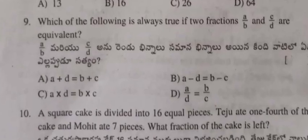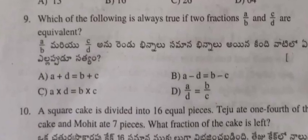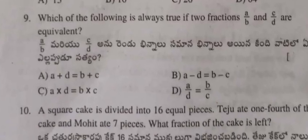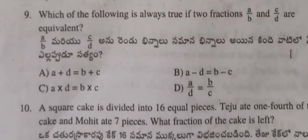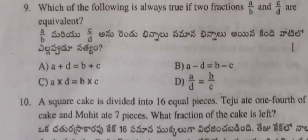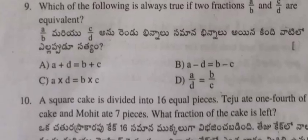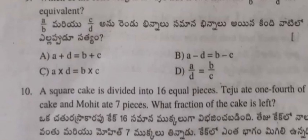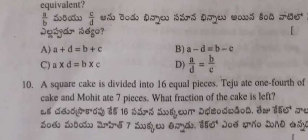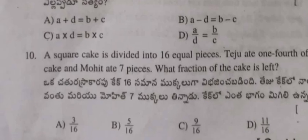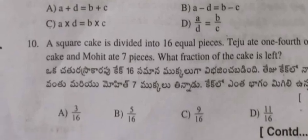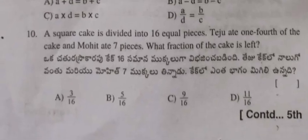Question 9: Which of the following is always true if two fractions a/b and c/d are equivalent? (A) a + d = b + c, (B) a − d = b + c, (C) ad = bc, (D) a/d = b/c.